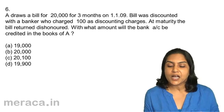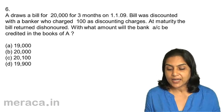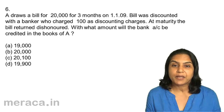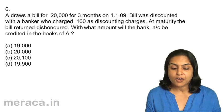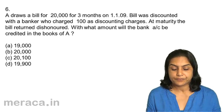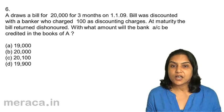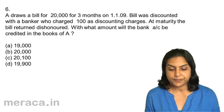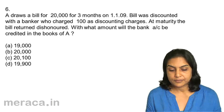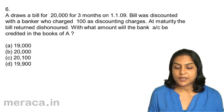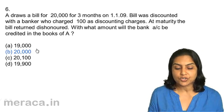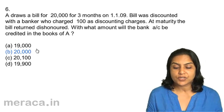Question 6: A draws a bill for $20,000 for three months on 1-1-2009. The bill was discounted with a banker who charged $100 as discounting charges. At maturity, the bill returned dishonoured. With what amount will the bank account be credited in the books of A? Options: $19,000, $20,000, $20,100, $19,900. The correct answer is $20,000. If noting charges were there, noting charges would also be included. Answer: 6B, $20,000.